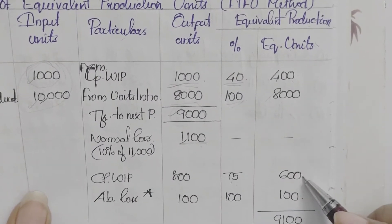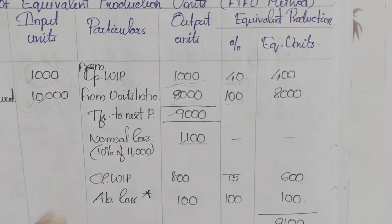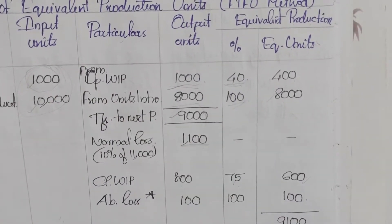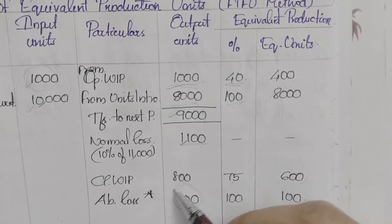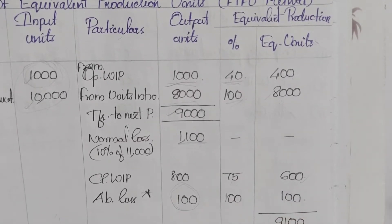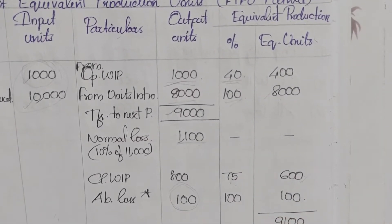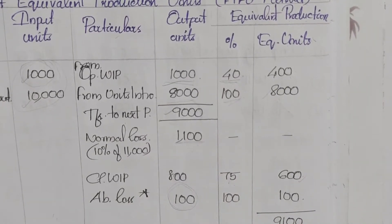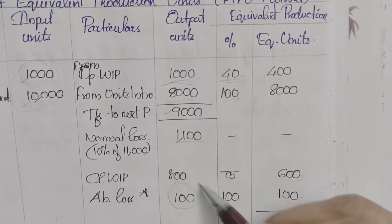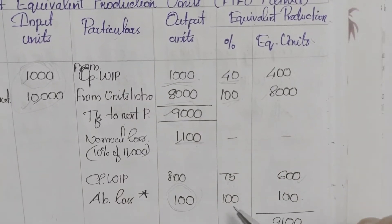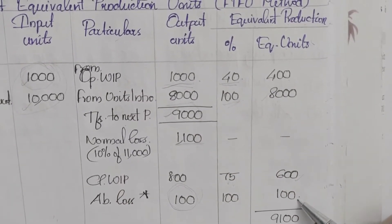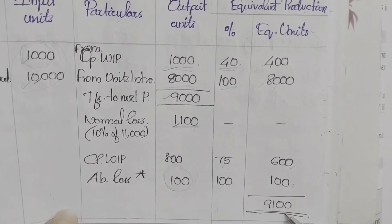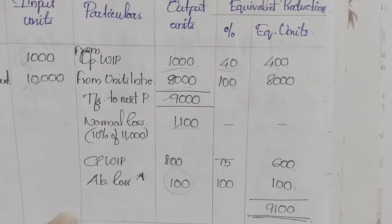Closing WIP is 75% complete: 800 × 75% = 600 equivalent units. The balancing figure gives abnormal loss of 100 units, which is assumed to be 100% complete, so equivalent units = 100. Total equivalent units = 9,100.